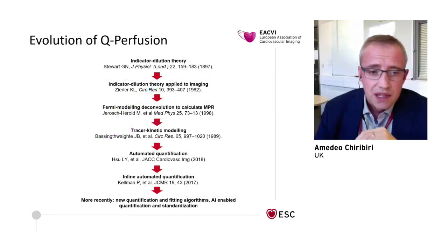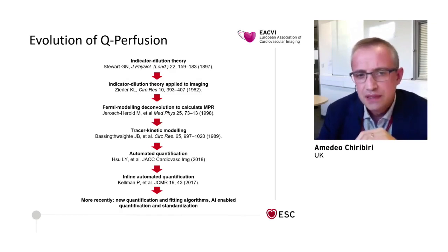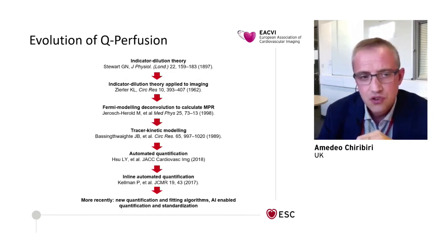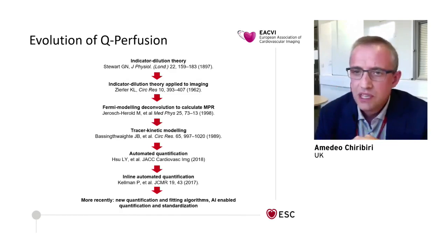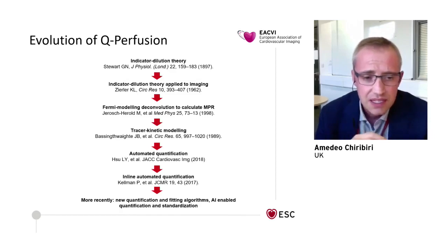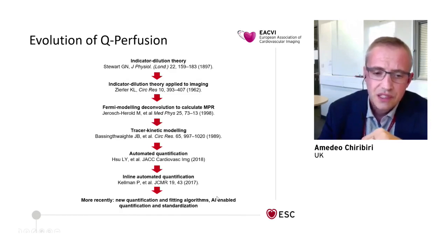MRI keeps evolving. The story of quantification started about 120 years ago with indicator dilution theory published in 1897, evolving through first-pass tracer injections, Fermi modeling proposed by Michael Jerosch-Herold and Norbert Wilke to calculate myocardial perfusion reserve, then tracer kinetic modeling, automatic quantification, and eventually inline automatic quantification as shown in Sven's examples. Very recently we have seen new quantification and fitting methods, first applications of artificial intelligence to quantification, and an effort towards standardization.